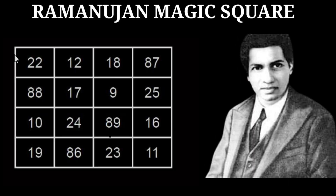Welcome guys. Today I will tell you about the Ramanujan magic square. This square was given by the great Indian mathematician Ramanujan. This square has 16 boxes, and he put some magic numbers inside this square.